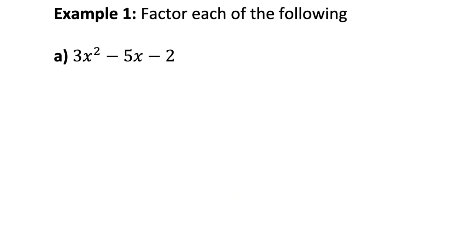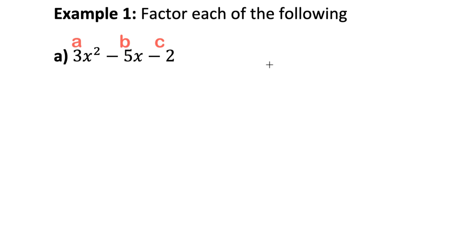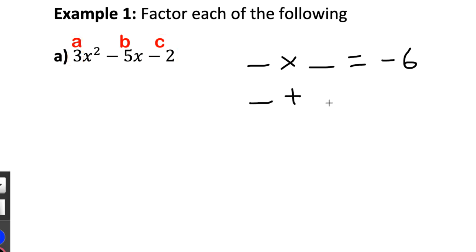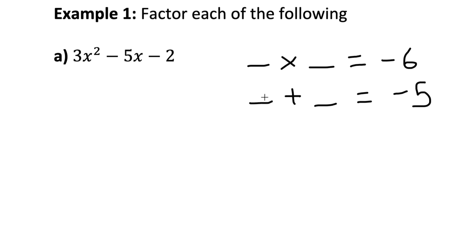We need to split the middle term into two terms that satisfy a product and sum. We need integers with a product of a times c — so three times negative two, which is negative six — and a sum equal to the b value, which is negative five. The integers that satisfy this are negative six and one: negative six times one is negative six, and negative six plus one is negative five.